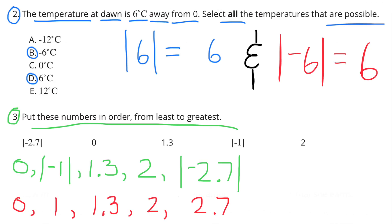Number 3. Put these numbers in order from least to greatest: the absolute value of negative 2 and 7 tenths, 0, 1 and 3 tenths, the absolute value of negative 1, and 2.